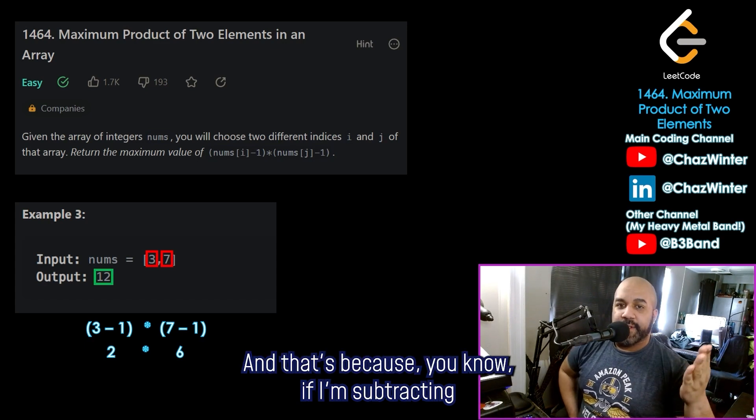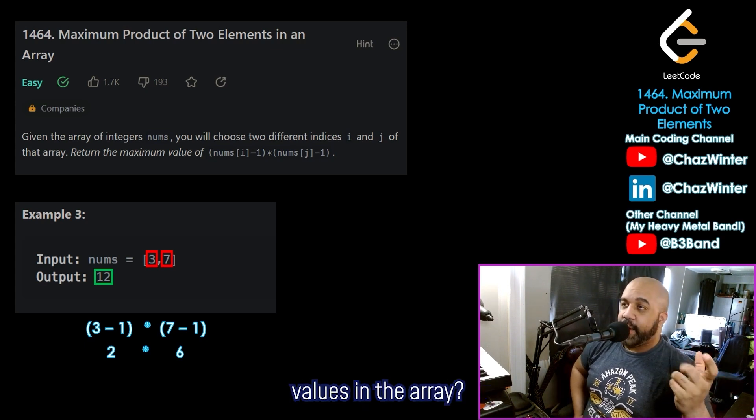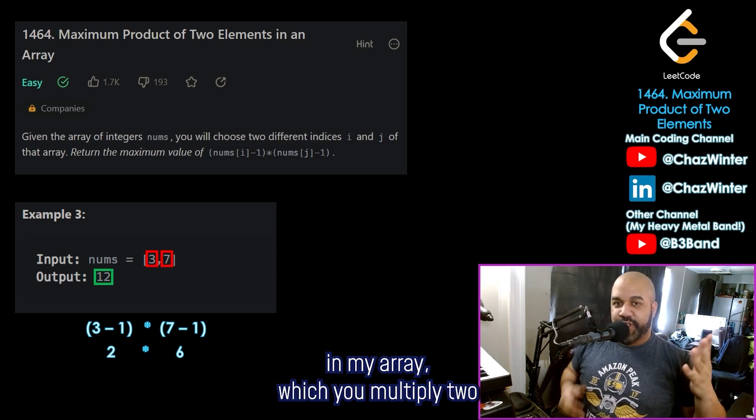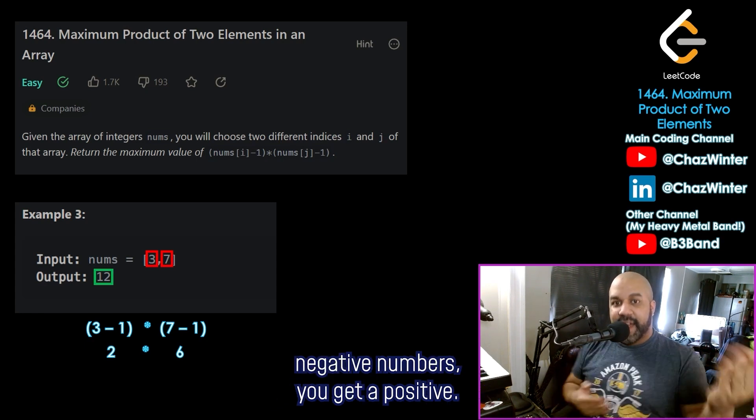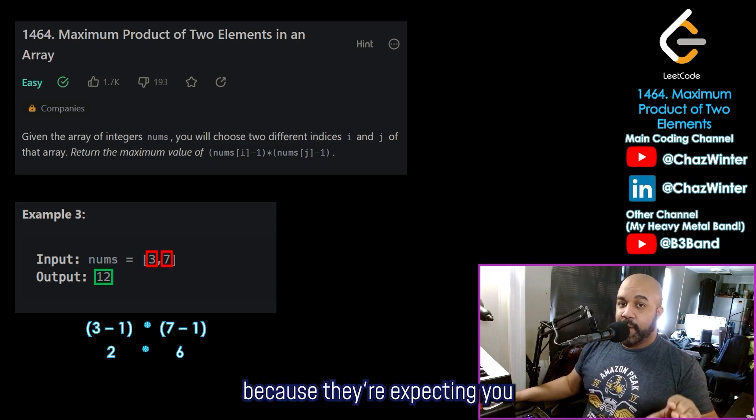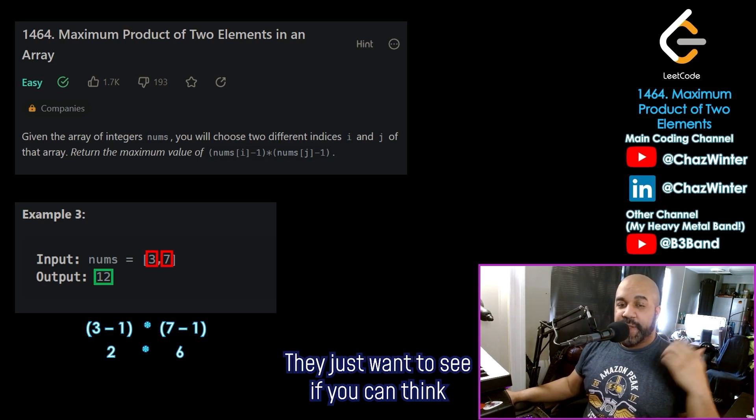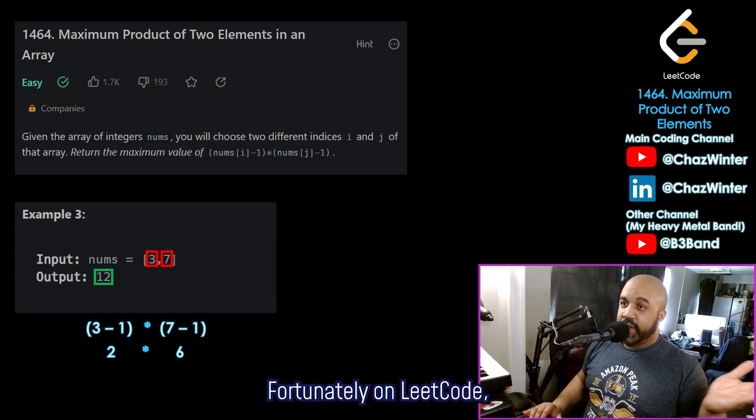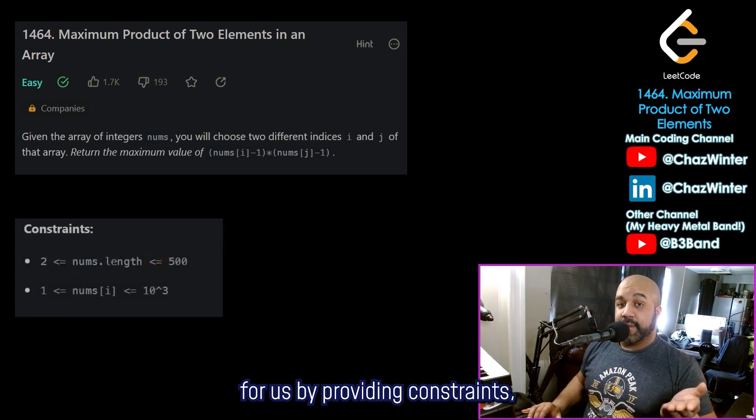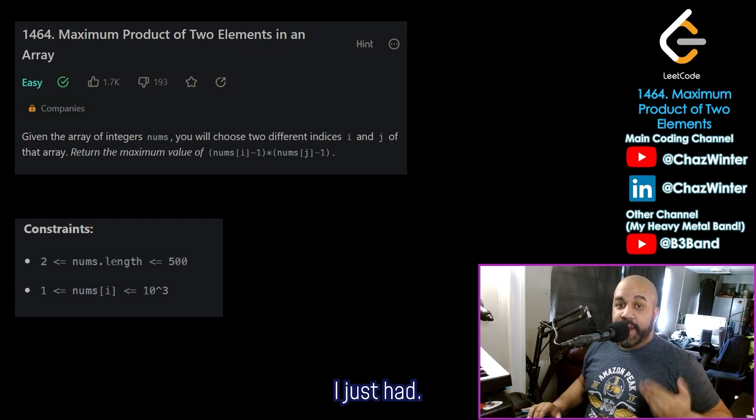Another question that I might immediately have for my interviewer is, what is the largest and the smallest possible values that I can receive in this array? And that's because, you know, if I'm subtracting one from these values, what if I think I'm choosing the two largest values in the array, but then as it turns out, there are negative numbers in my array, which you multiply two negative numbers, you get a positive. These are usually things that the interviewers will intentionally leave out because they're expecting you to ask about them. They just want to see if you can think about these edge cases.